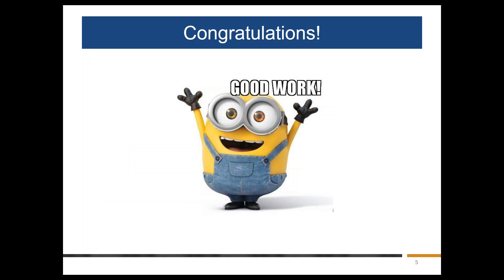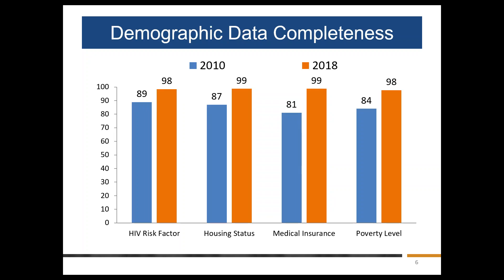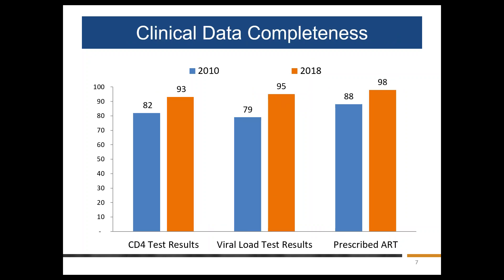I want to start with some good news: RSR data are incredibly complete, so congratulations on your hard work. Looking at demographic data elements over time, the blue bar represents 2010 completeness rates and the orange bar represents 2018 rates. Without fail, completeness rates have gone up, most notably for health insurance, which increased from just 81% complete in 2010 to 99% complete in 2018. Clinical data completeness has also improved — viral load went from 79% complete in 2010 to 95% complete in 2018, which is fabulous given viral load is a critical data element for evaluating Ryan White performance.